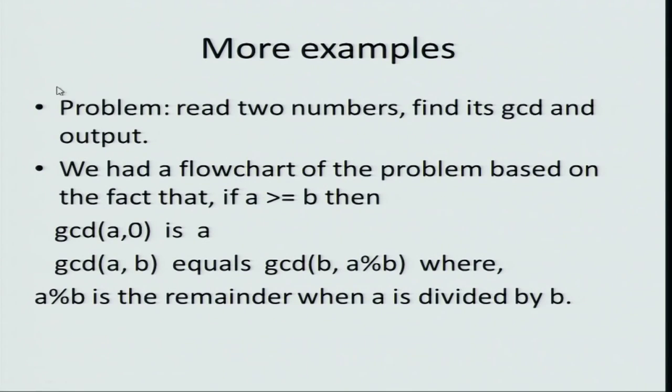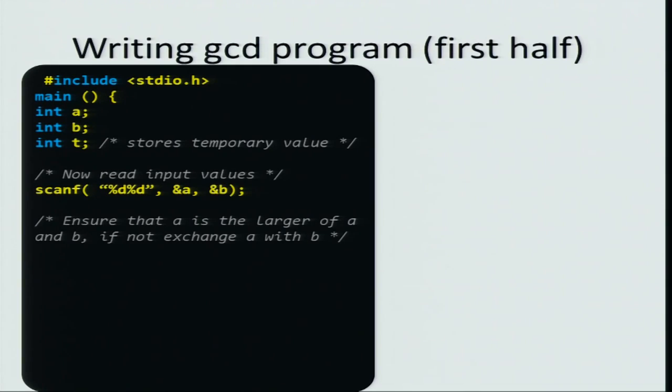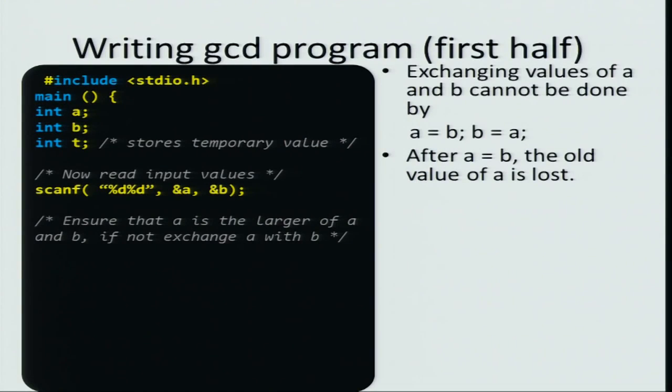Recall in the GCD equation that we saw, we assume that a is greater than or equal to b. Now, what if the user is unaware of this condition and entered the lesser number first — he just entered the numbers such that a is less than b? We need to correct that; we need to make sure that a is the greater number. So we need to exchange the values of a and b if a is less than b.